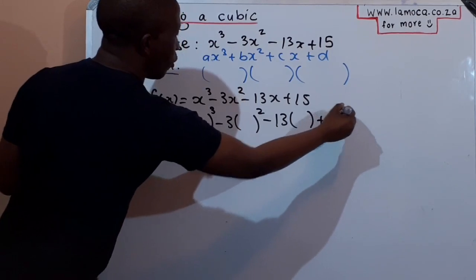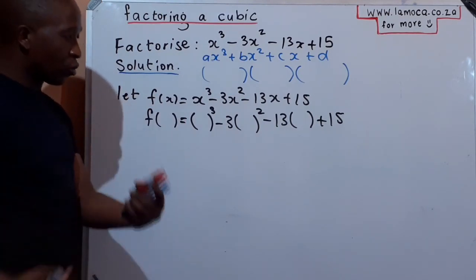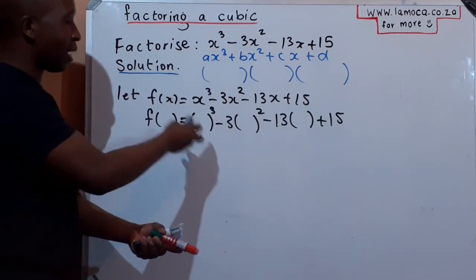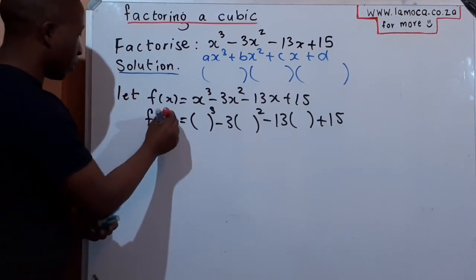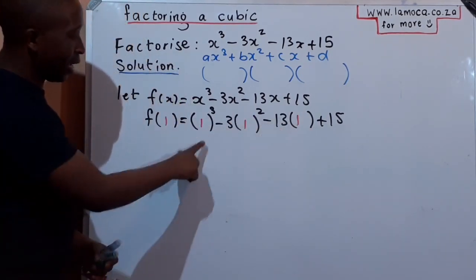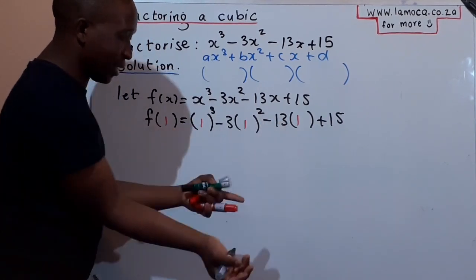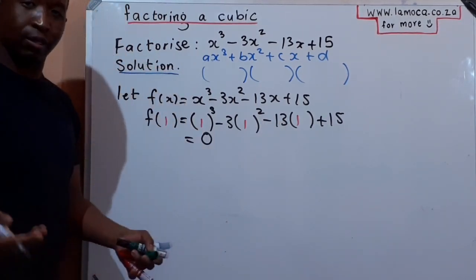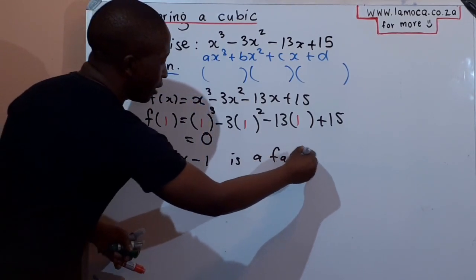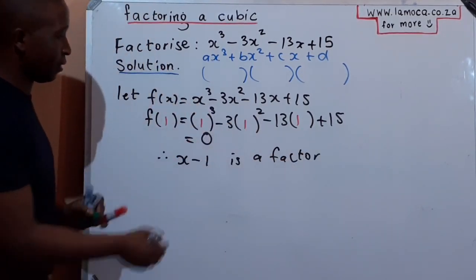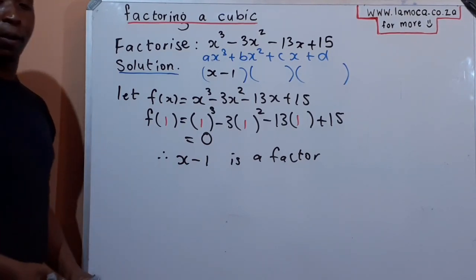You're looking for a number to substitute for x that produces exactly zero. Try x = 1: 1 - 3 - 13 + 15 gives 1 + 15 = 16, and -3 + (-13) = -16, so the answer is zero. Therefore, when you substitute one, you get zero, and the conclusion is that (x - 1) is a factor. When one is a root, (x - 1) is the factor — be careful of that distinction. So the first factor is (x - 1).